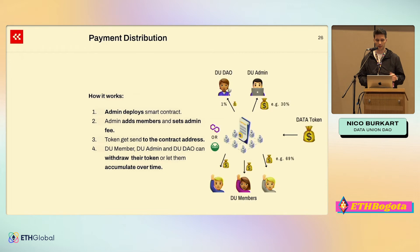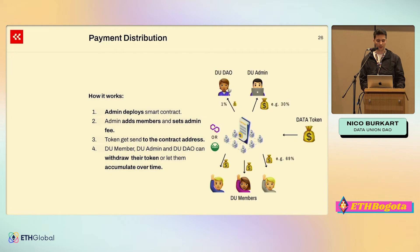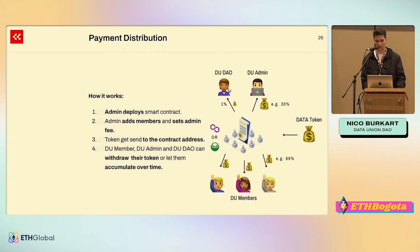You've got an admin — that's going to be your project. You have an Ethereum address that deploys that contract, and that's the automatic admin. This admin can then add members, the data publishes, and the admin can set an admin fee — for example, 30%. If tokens get sent into that contract, the admin gets 30%, and your data union members will share 69% of those incoming tokens. 69% because 1% goes to the Data Union DAO, and we use this 1% for funding new projects and going to hackathons and those kinds of things.